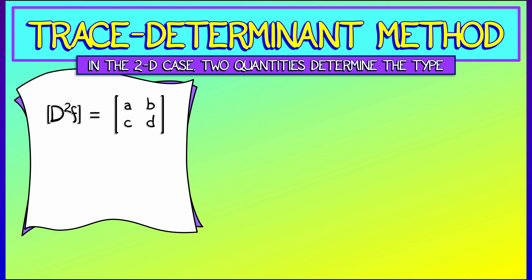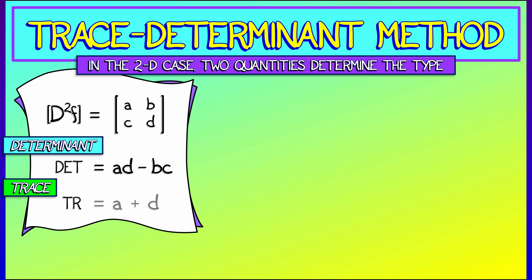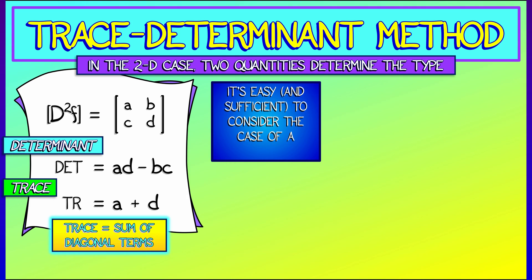Let's say that our second derivative is matrix ABCD. The first of these quantities is the determinant AD minus BC. You remember that from volume one. The second is going to be new to you. This is something called the trace of the matrix. The trace is A plus D, the sum of the diagonal terms. These two numerical quantities determine whether you have a local max, a local min, even a saddle point.